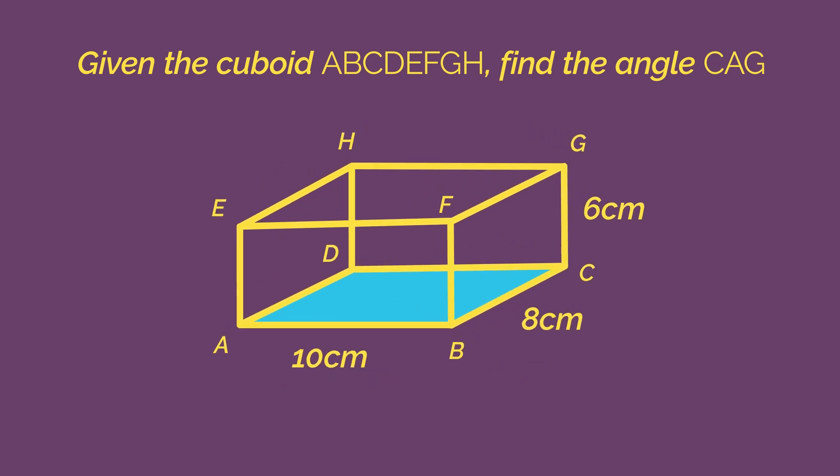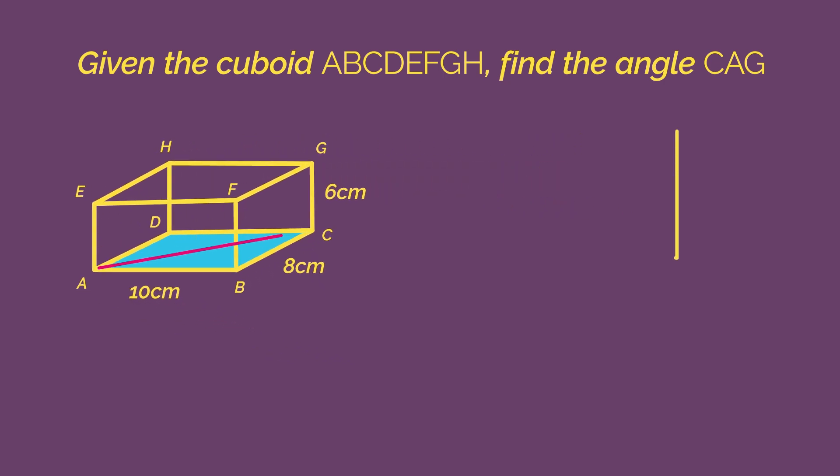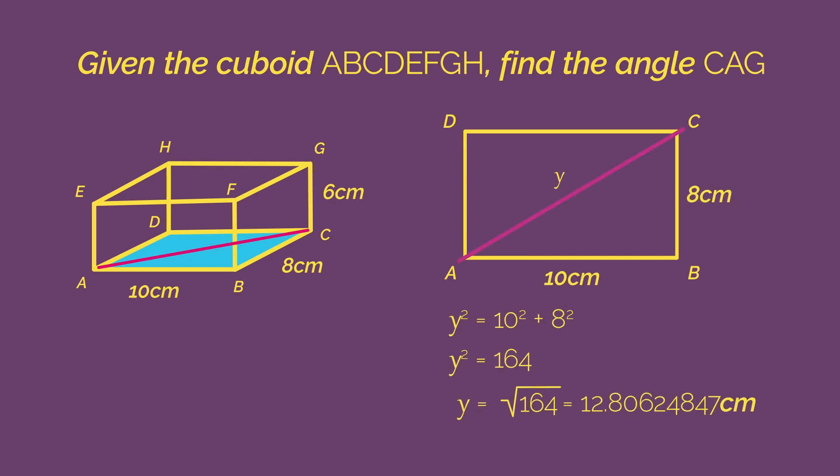To find the length of AC, we need to go back to our first diagram and draw on the line AC. We can easily find the length of AC using Pythagoras on this triangle.